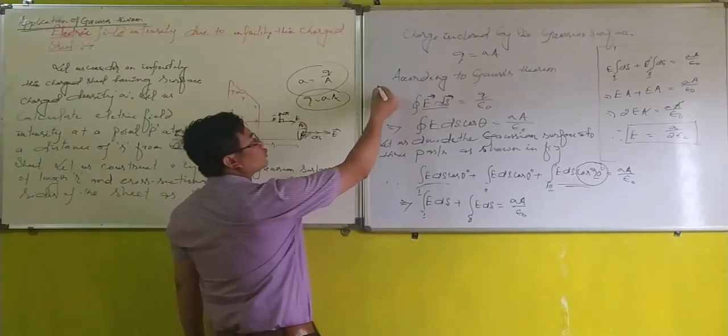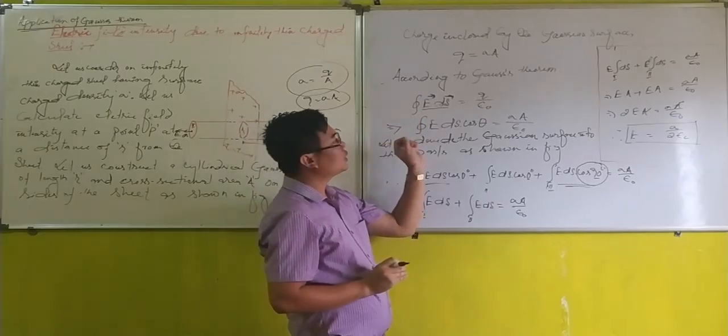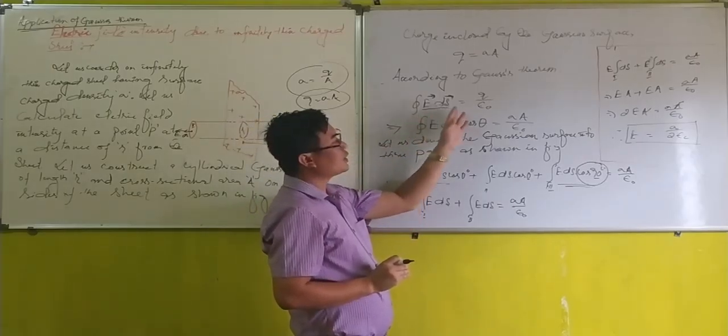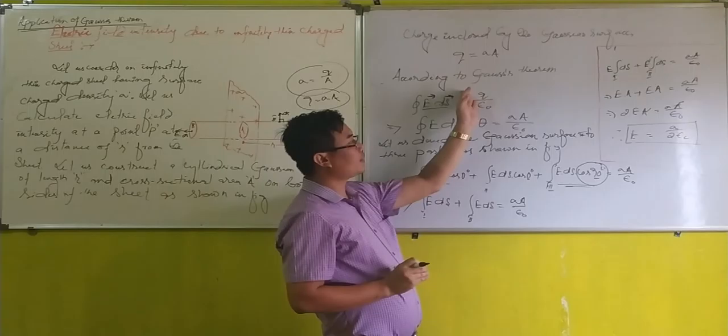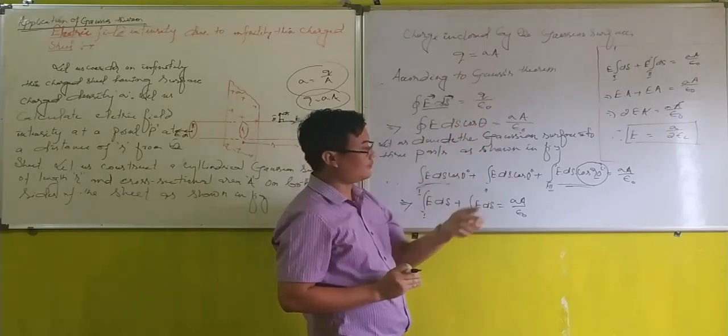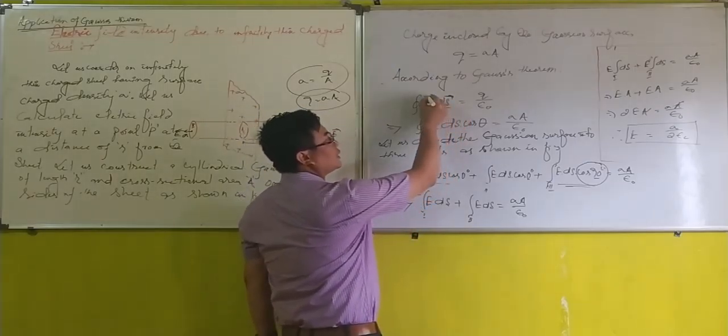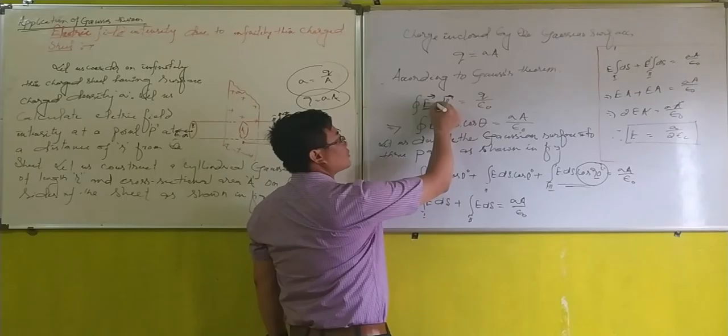And according to Gauss's law, electric flux linked with a closed surface is equal to one over epsilon naught times the charge enclosed by the Gaussian surface. Here, E vector dot dS vector...